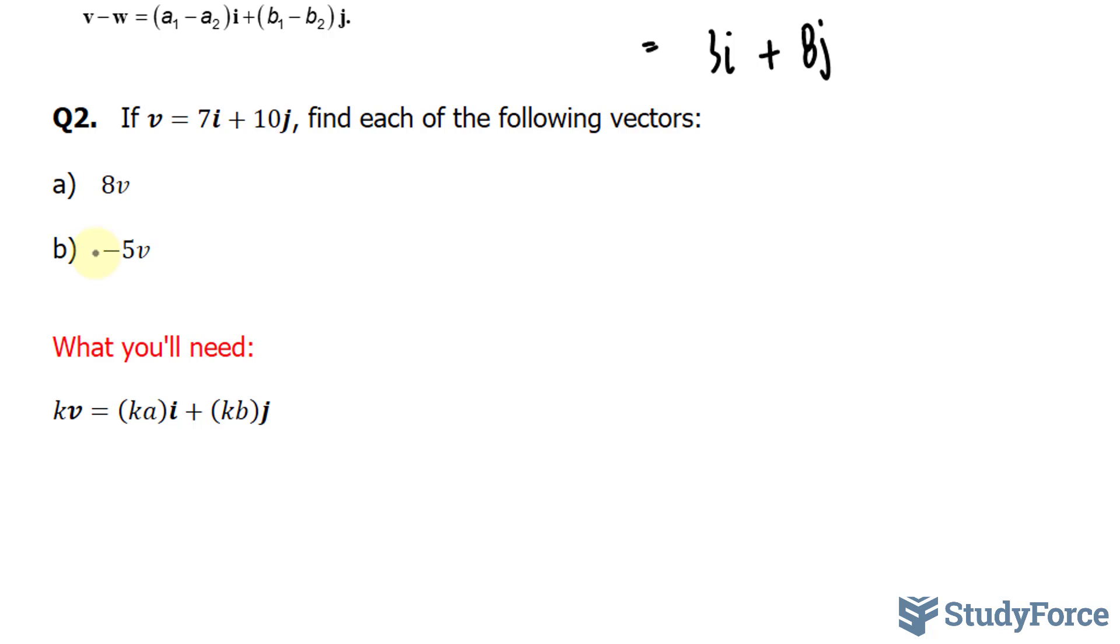So we'll take our factor of 8 and multiply both this 7 and this 10 by that factor. So we have 8 times v is equal to 7 times 8 is 56, plus 8 times 10 is 80.